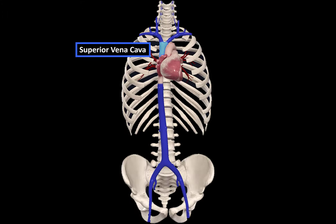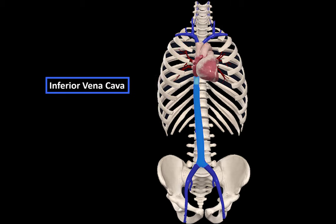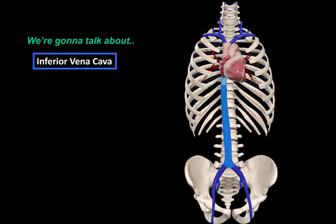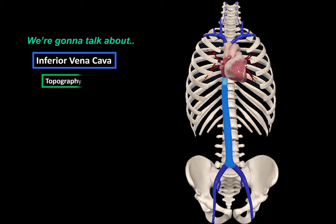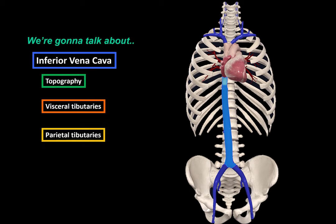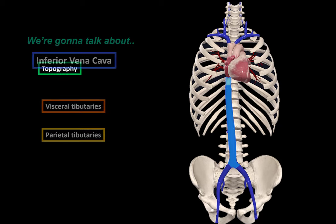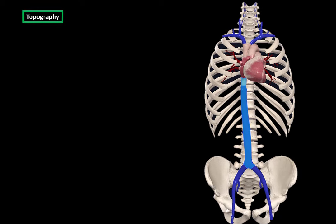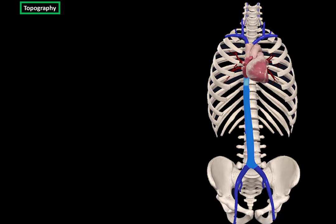Now that we are done with the superior vena cava, let's go ahead and cover the anatomy of the inferior vena cava. In this video, we're going to cover the topography, the visceral tributaries, and the parietal tributaries of it. Let's now go ahead and start with the topography.